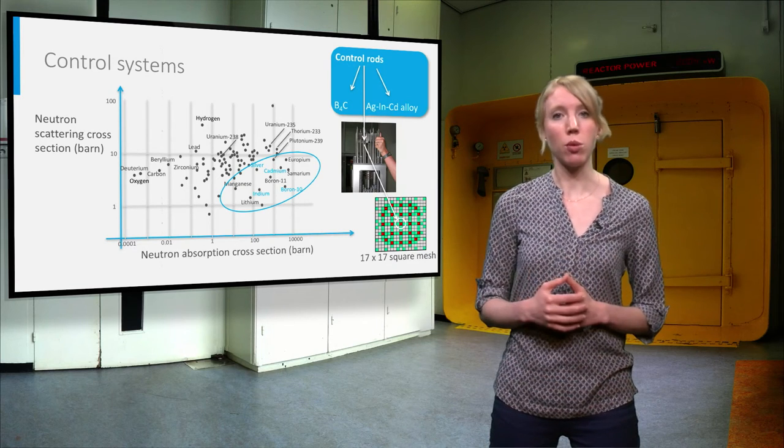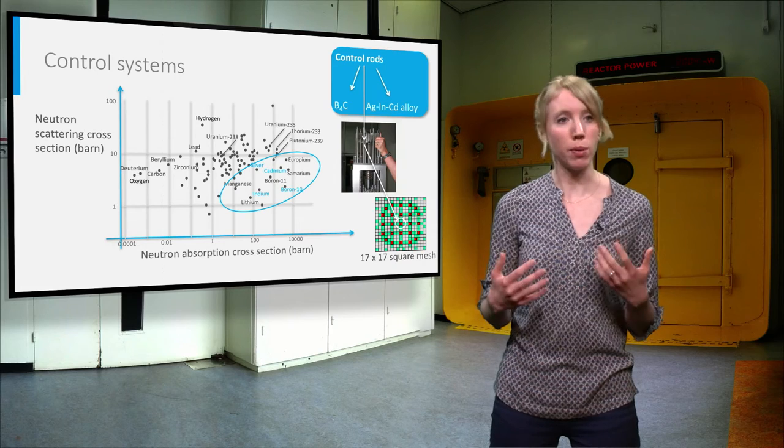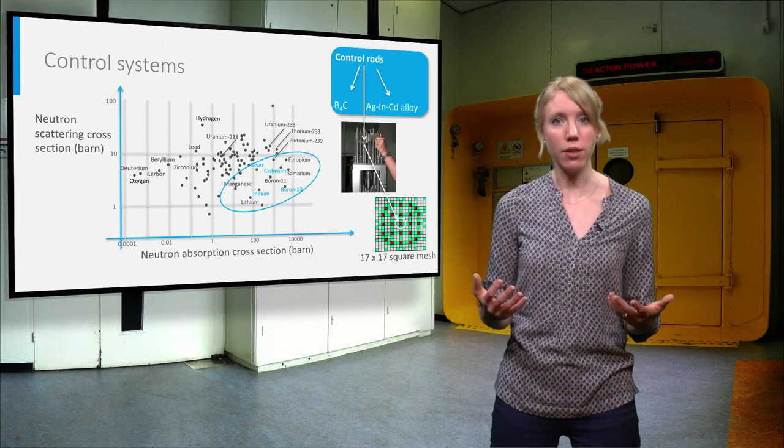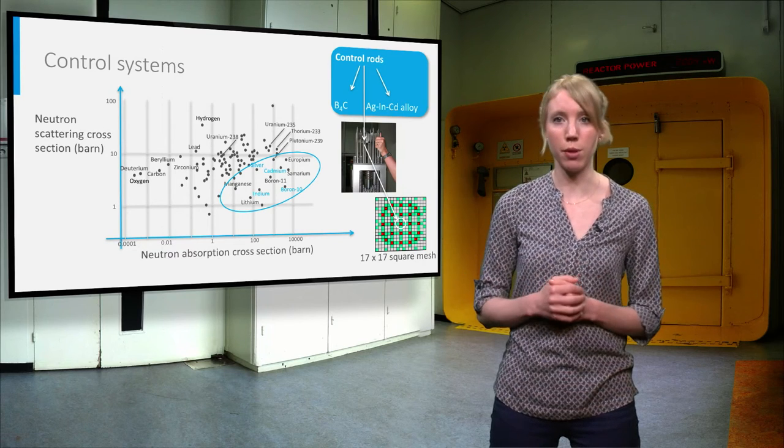The control rods in boiling water reactors contain boron carbide. In pressurized water reactors, they contain boron carbide or a silver indium-cadmium alloy.